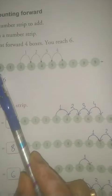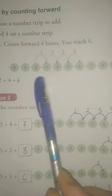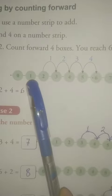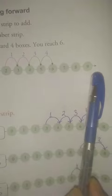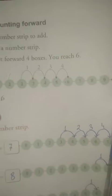तो इस number strip में कहां से कहां तक number है देखिए आप लोग 0, 1, 2, 3, 4, 5, 6, 7, 8, 9.